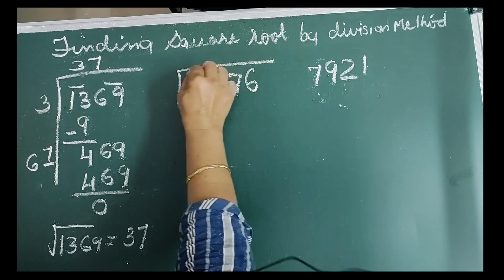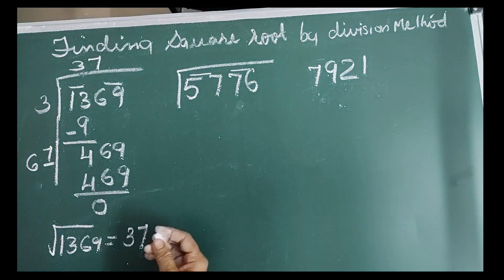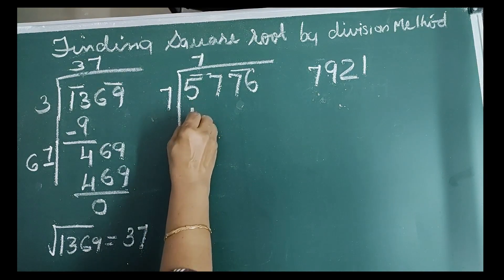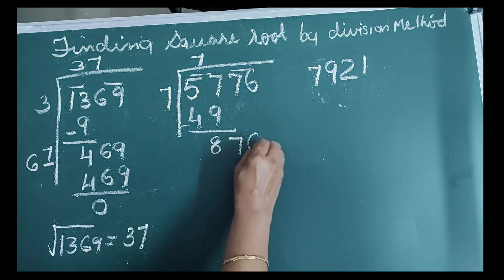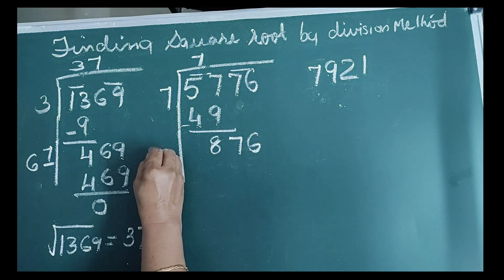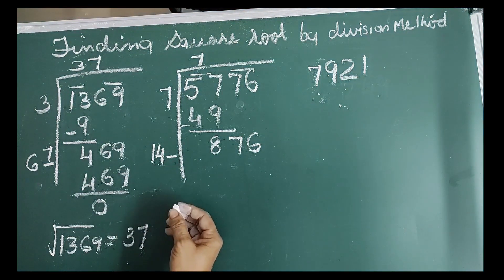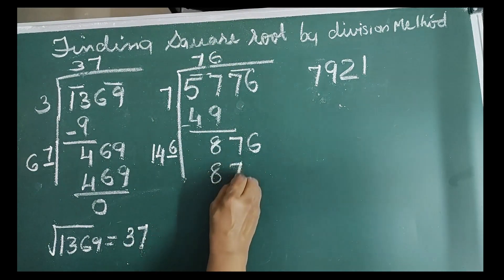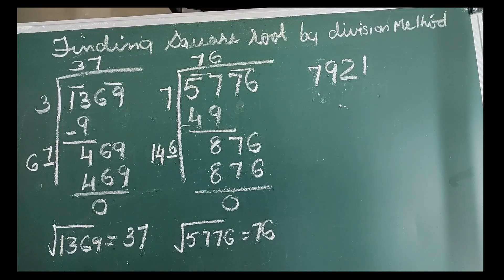Next number is 5,776. Putting bars, we get 76 as the right bar and 57 as the left bar. Divisor and quotient are 7. 7 times 7 is 49, remainder is 8. Bring down next bar 76, new dividend is 876. Double the quotient to get 14 with a blank. Guess digit 6, quotient also 6. 6 into 146 is 876, remainder is 0. Therefore, square root of 5,776 is equal to 76.